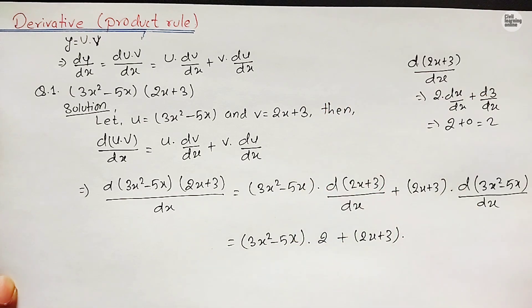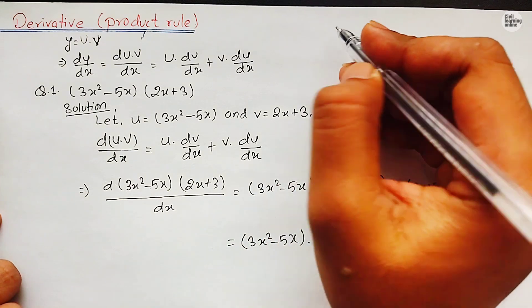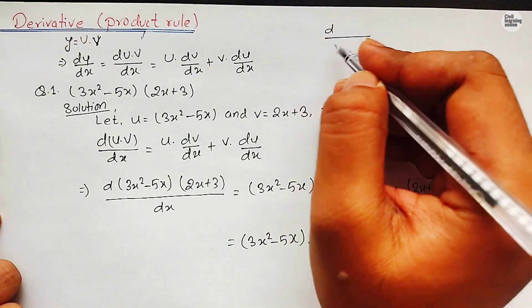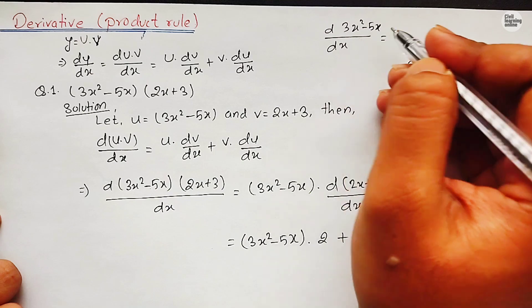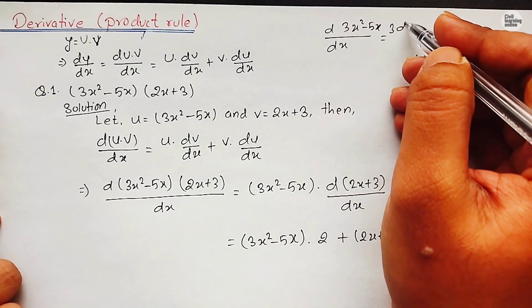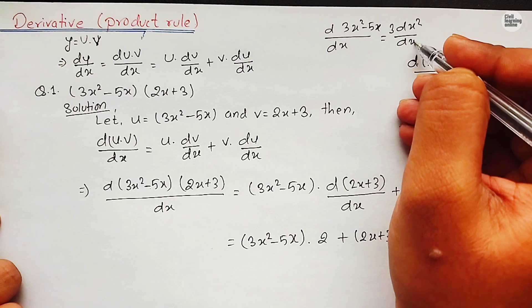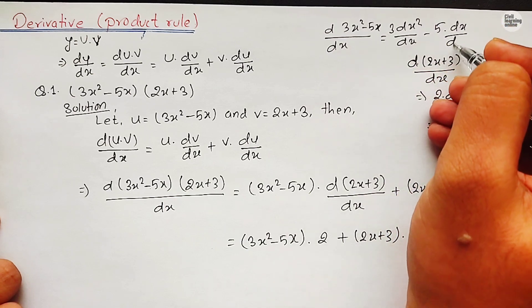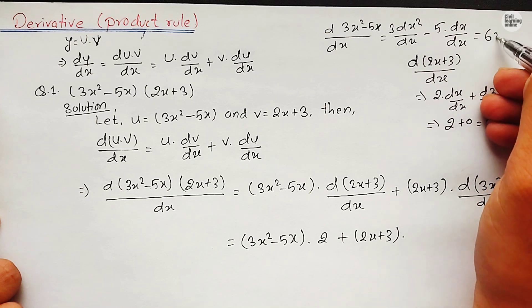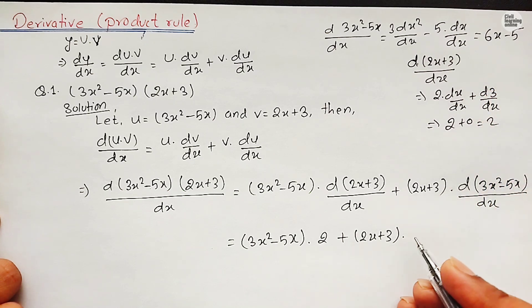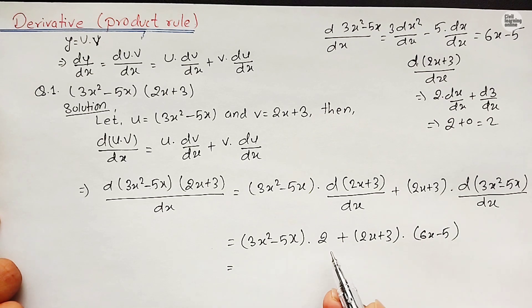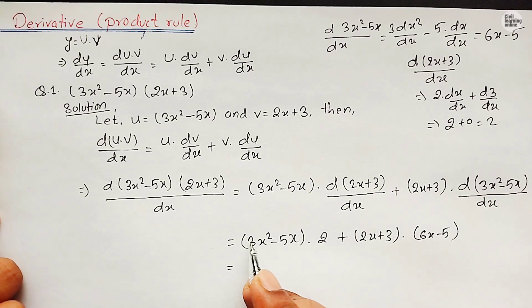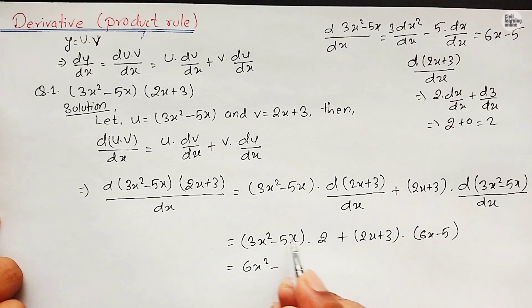For the derivative of 3x² - 5x, we split it as 3 times d(x²)/dx minus 5 times dx/dx, giving us 3 times 2x minus 5, which equals 6x - 5. Now we multiply the terms: (3x²)(2) - (5x)(2) gives 6x² - 10x, and (2x+3)(6x-5) begins expanding.